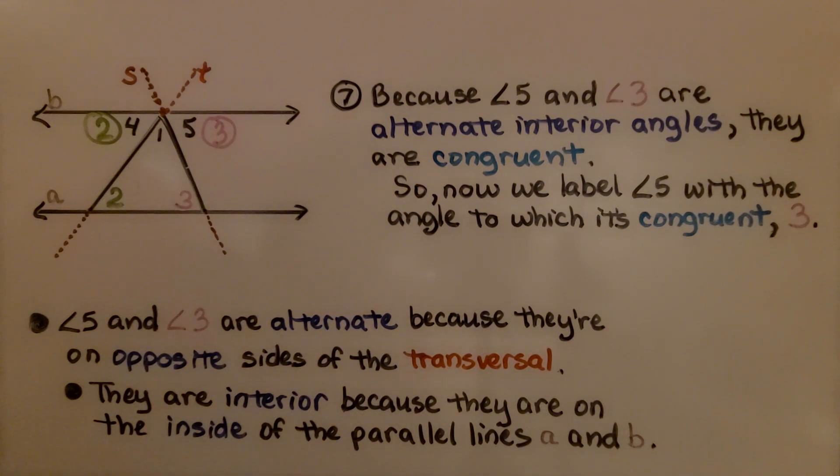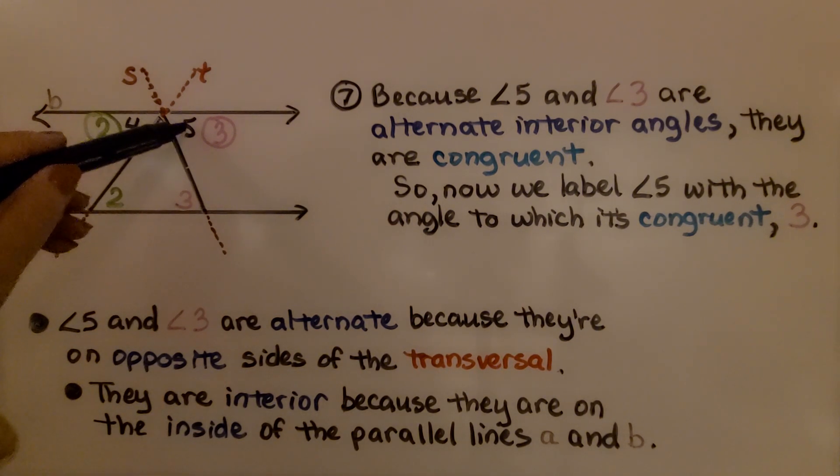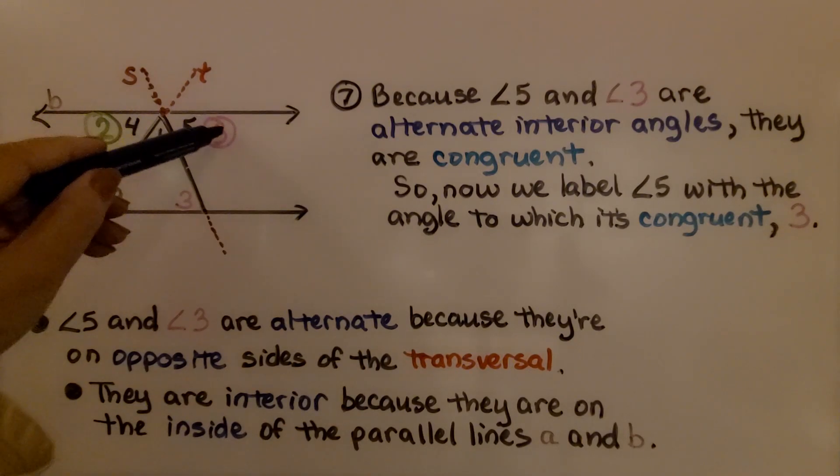And because angle 5 and angle 3 are alternate interior angles, they are congruent. So now we label angle 5 with the angle to which it's congruent, 3.